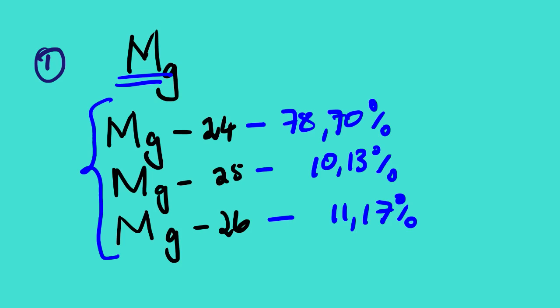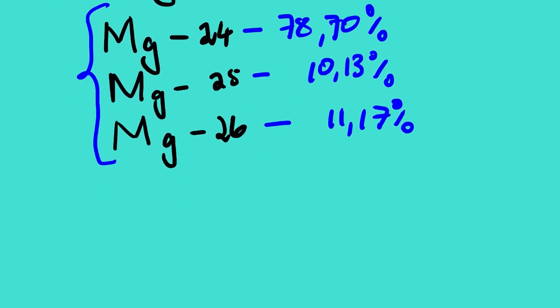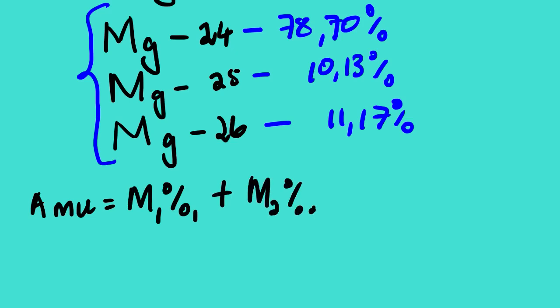There is an equation that we are going to use. The equation for average atomic mass, normally in AMU, is: we take the mass of the first isotope multiplied by its percentage, plus the mass of the second isotope multiplied by its percentage, plus the mass of the third isotope multiplied by its percentage. You should know that before we substitute, we are going to express the percentages in decimal form. We simply divide by 100.